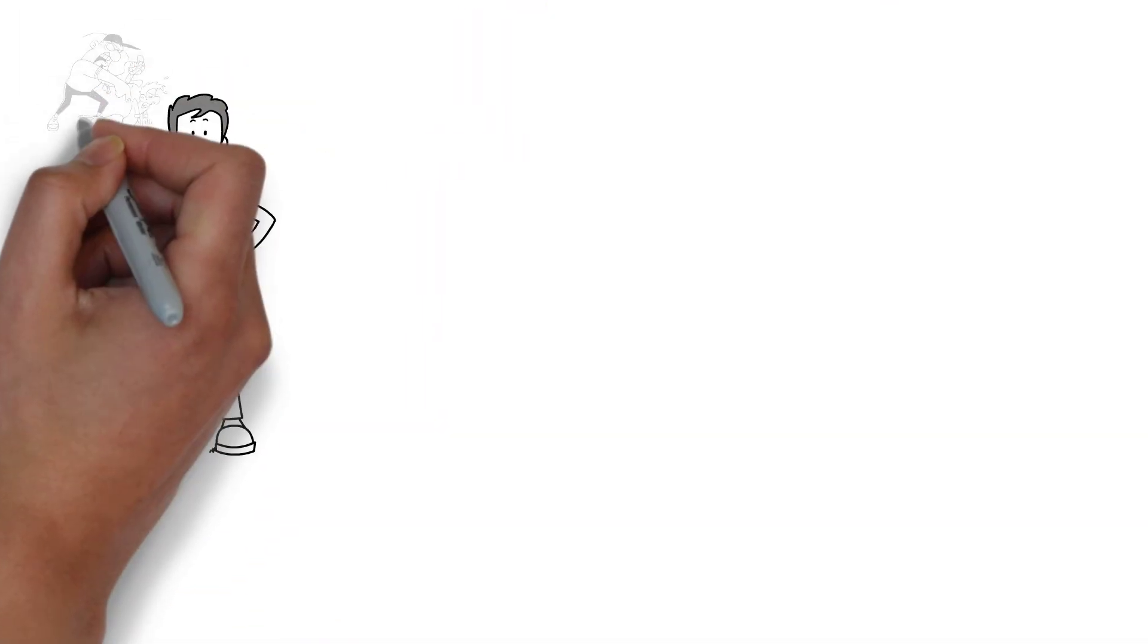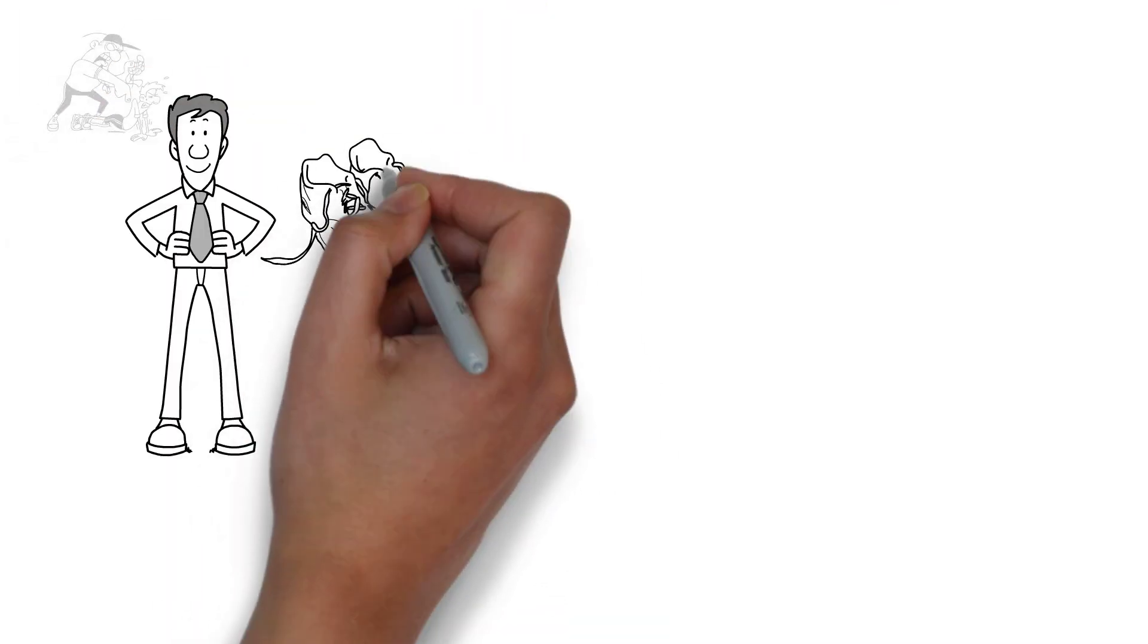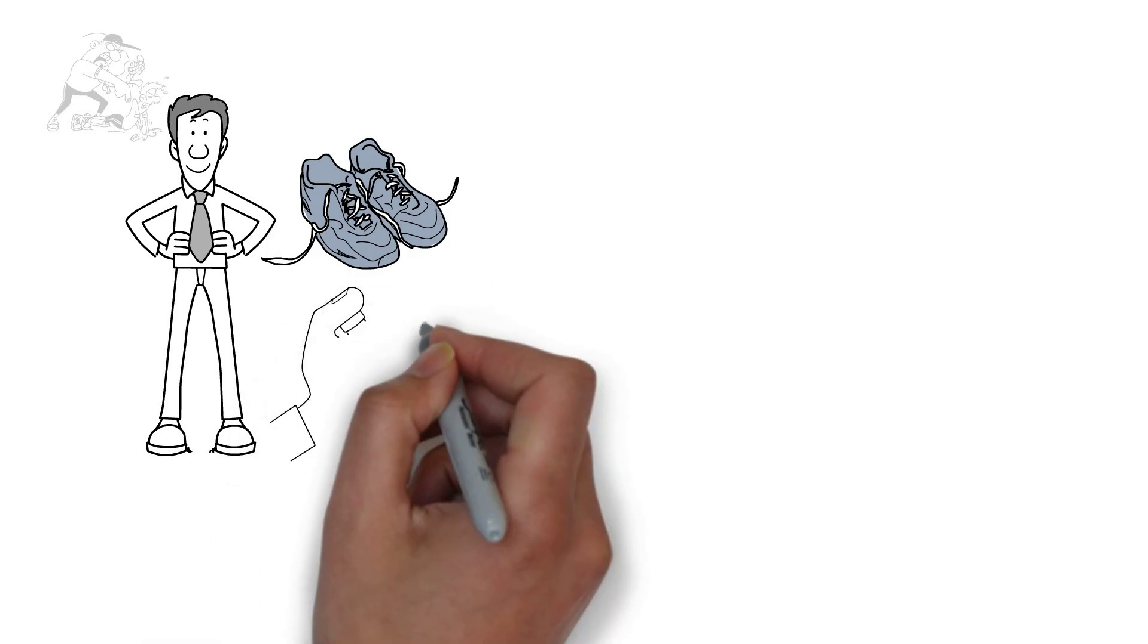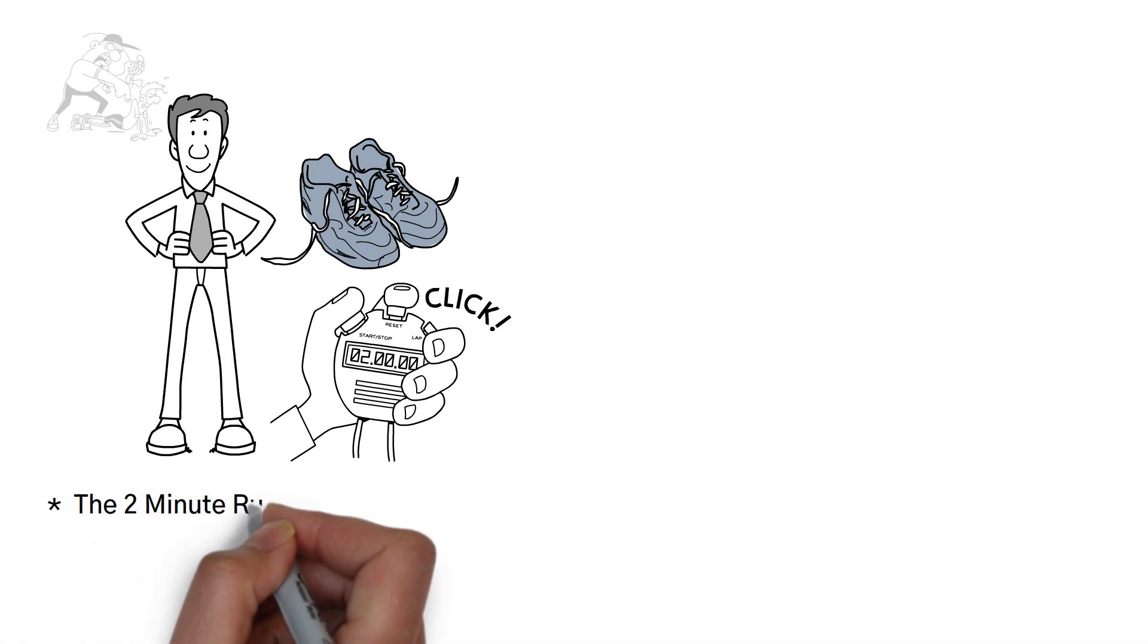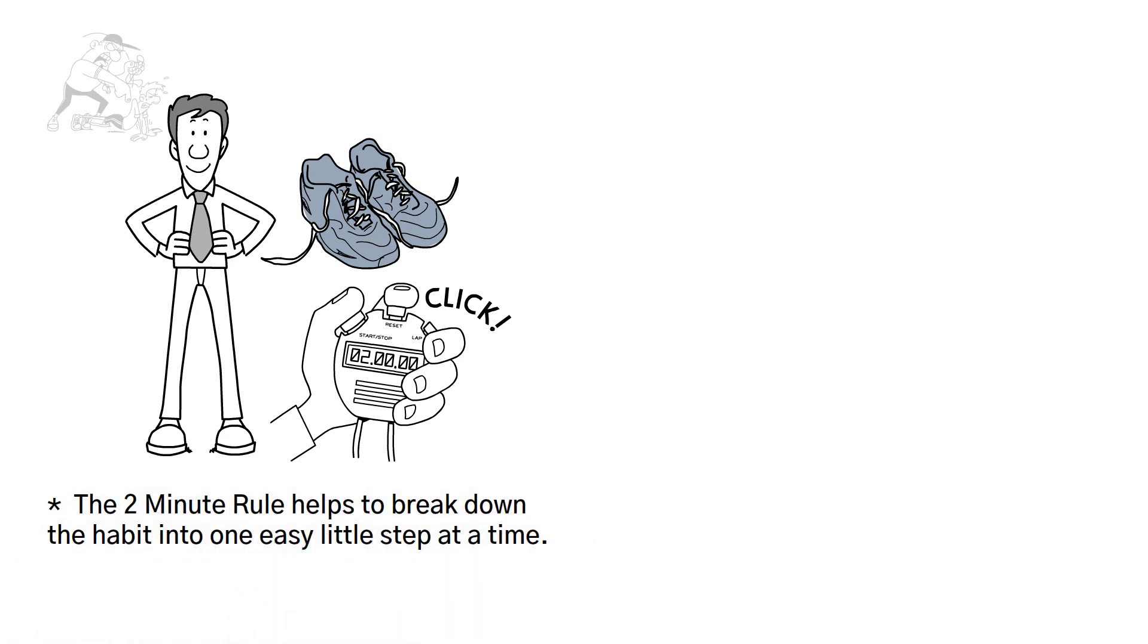Law number one, make it easy. Example, you want to go to the gym every morning. Start with tying your shoelaces and getting out of the house as soon as you wake up. Begin with something which will take you less than two minutes to do. The two-minute rule helps to break down the habit into one easy little step at a time.